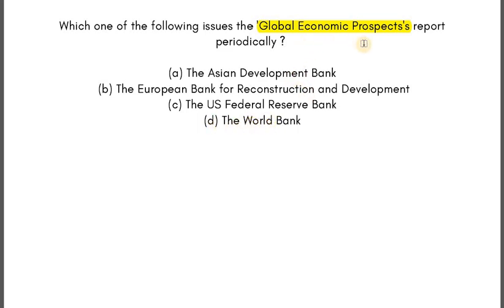So the answer is the World Bank. Note that this guessing rule doesn't apply in all cases — use it only as a last resort. The Global Economic Prospects report is indeed published by the World Bank. That's all for this session — thank you for watching, goodbye.